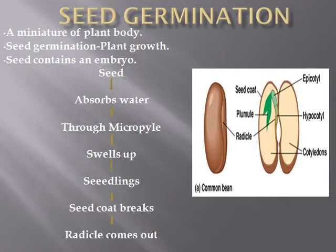You can see a picture of a seed here — it is a dicot plant with two cotyledons. You can see the embryonal axis which consists of the epicotyl, which is below the plumule and above the cotyledons. The radicle will give rise to roots, and above that the hypocotyl is attached to the cotyledons. The seed coat covers the seed. This is the structure of the seed.